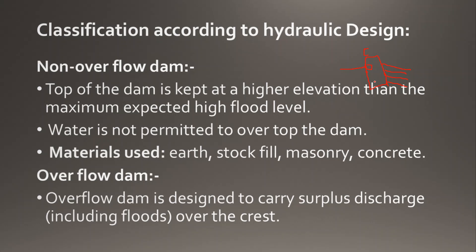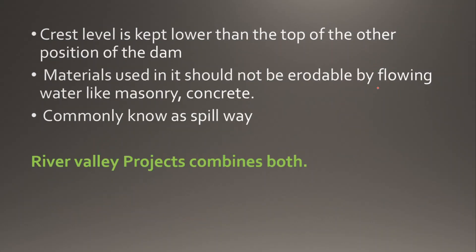An overflow dam is designed to carry surplus discharge including floods over the crest. When water crosses the height level, that is considered a flood. The crest level is kept lower than the top of the other portion of the dam. To decide this height, we collect rainfall data from PWD offices — for example, how much rainfall occurred in 2019, 2020, and previous years.